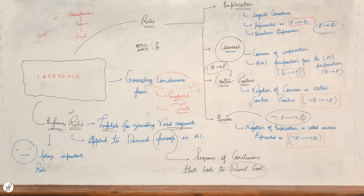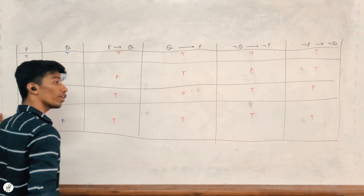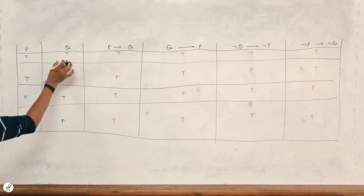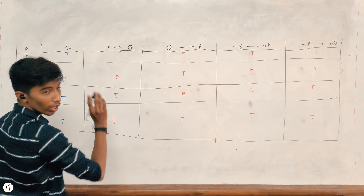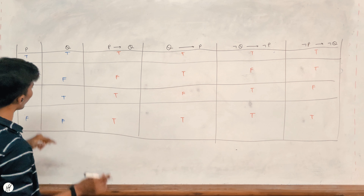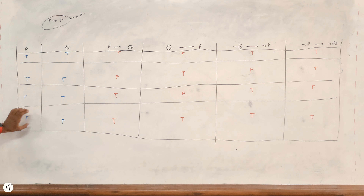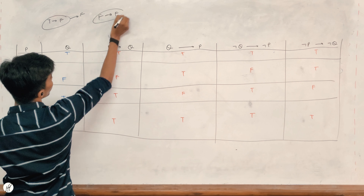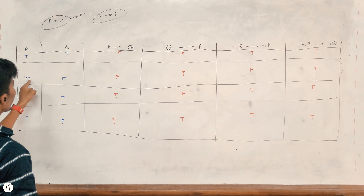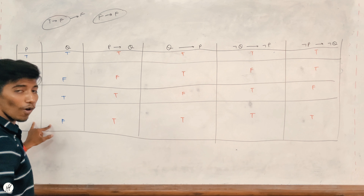Now we will see a truth table. We will see the inference rules and the truth table. I have said that P is true, true, false, false and Q is true, false, true, false. Now the first case: P implies Q — true implies true is true, true implies false is false, false implies true is true, false implies false is true.